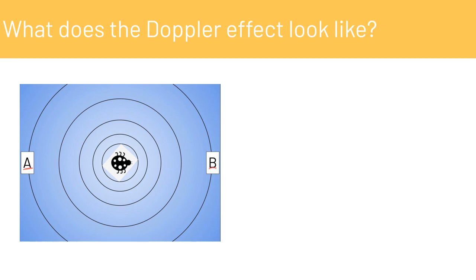As long as the bug stays in the center of the pool and doesn't move from the middle of the pool, the observer at A and the observer at B are going to see the waves cross their positions at the same time.